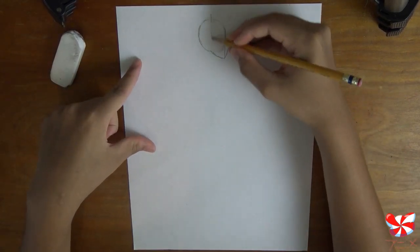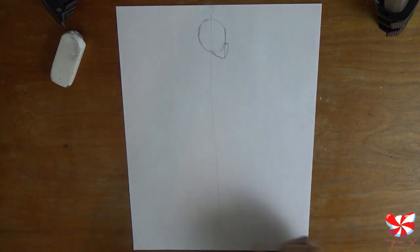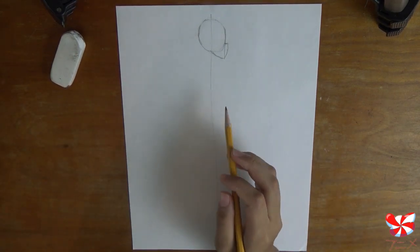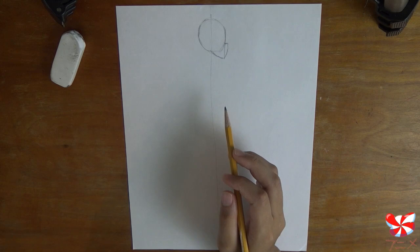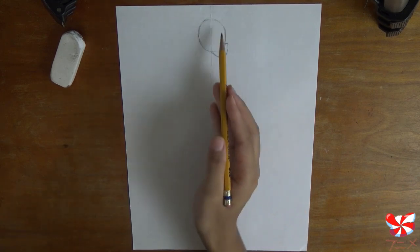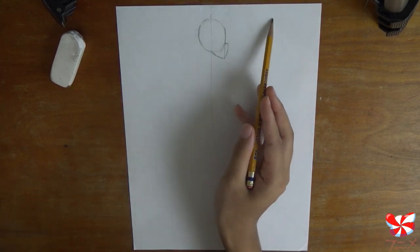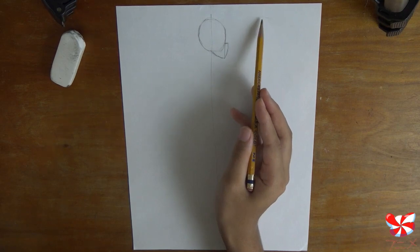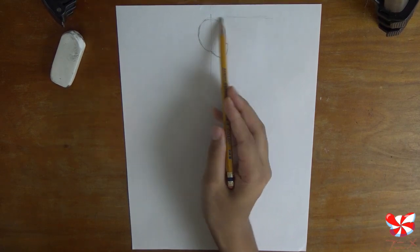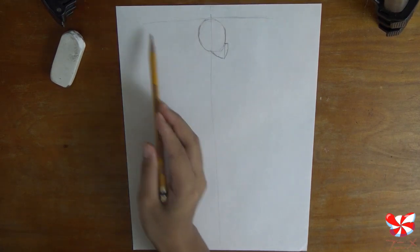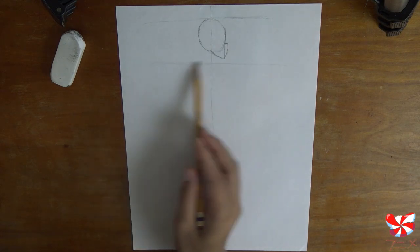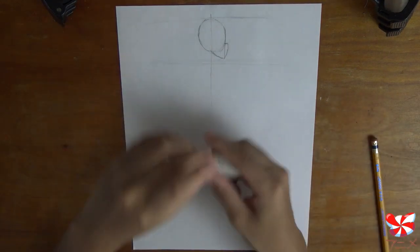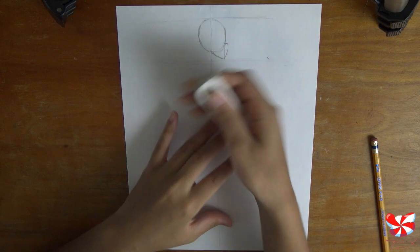I'm going to draw a line down the length of the page, just to help us keep the center of this image clear. And then we're going to measure out how many heads she will be. So right here we have one head, and you can use a ruler for this if you want, but I'm just going to use a pencil.